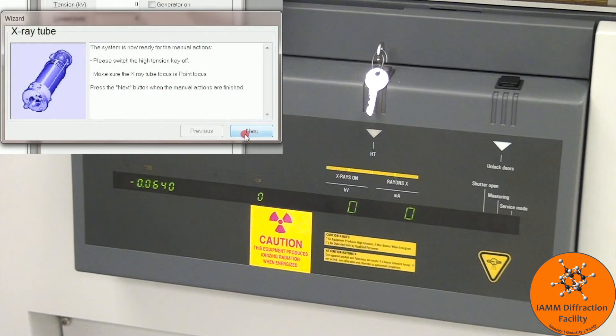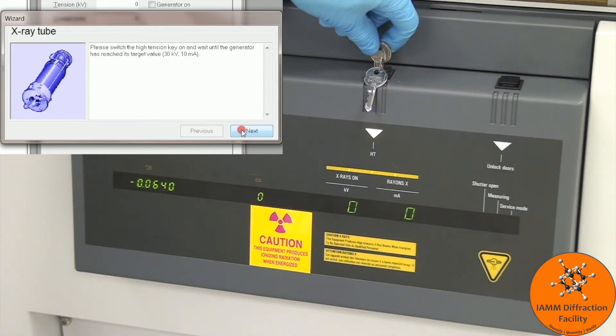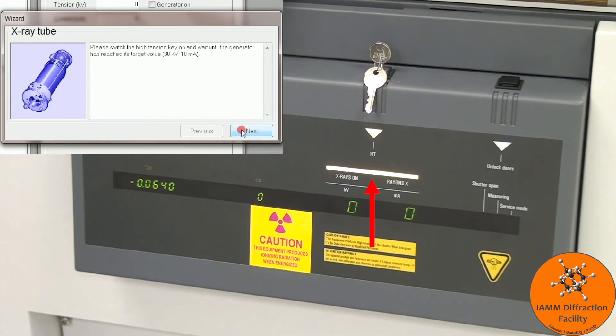We are now in point focus, so I can click next. This says to turn the high tension key back on, so I will turn that. There we see the lights come back on and then the numbers should start increasing in a moment. They will start out at 15 and 5 and then increase to 30 and 10.